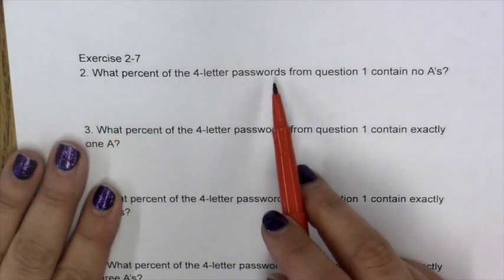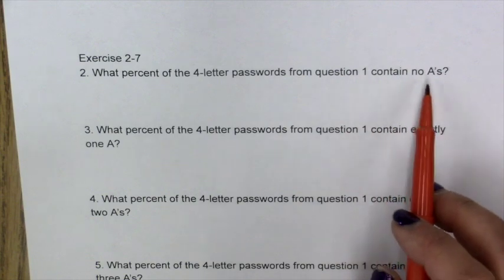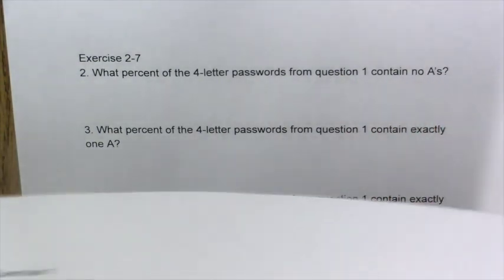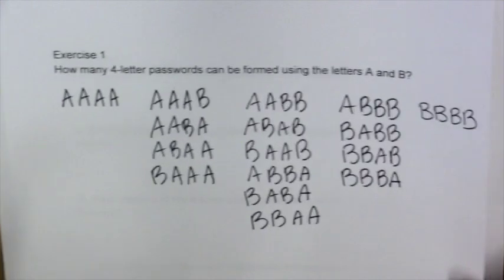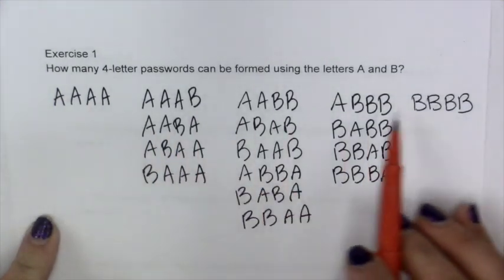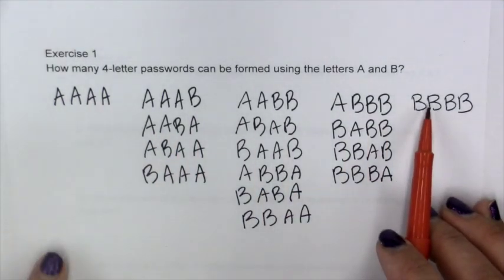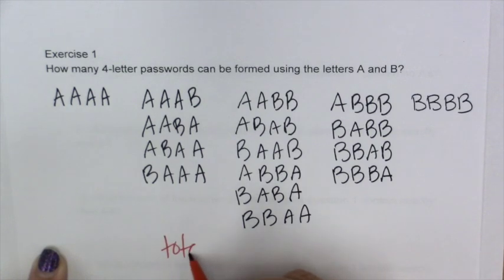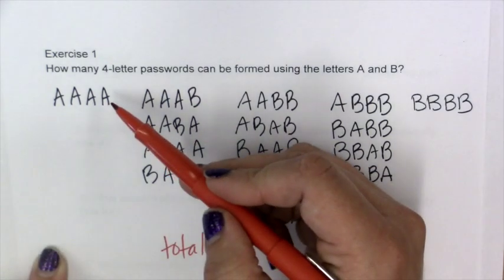So Question 2. What percent of the four letter passwords from Question 1 contain no A's? So if we go back and look at our list, the only one that doesn't have any A's is our last one. So it would be 1, but we need to find our total, which we have not done yet. So let's count all of them.